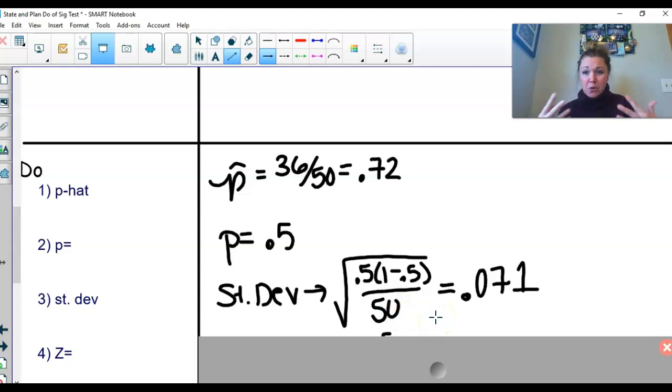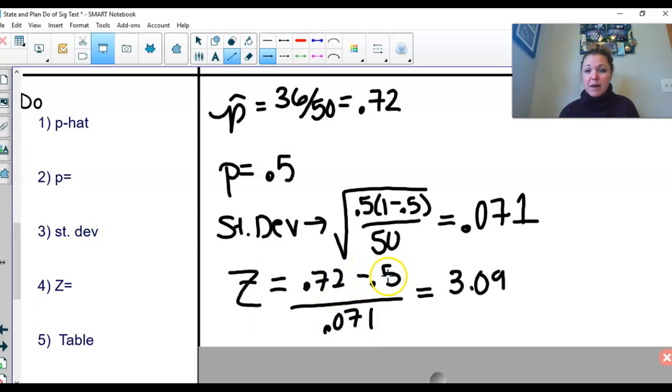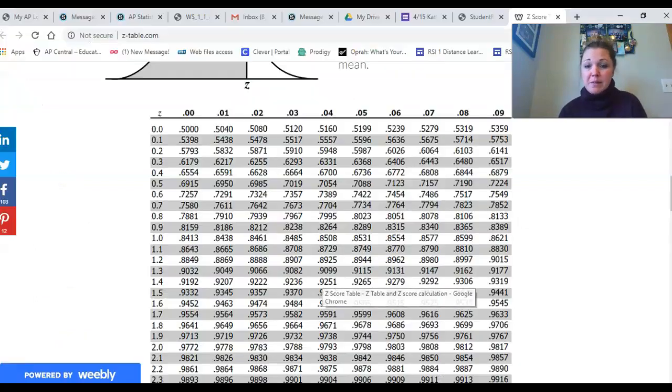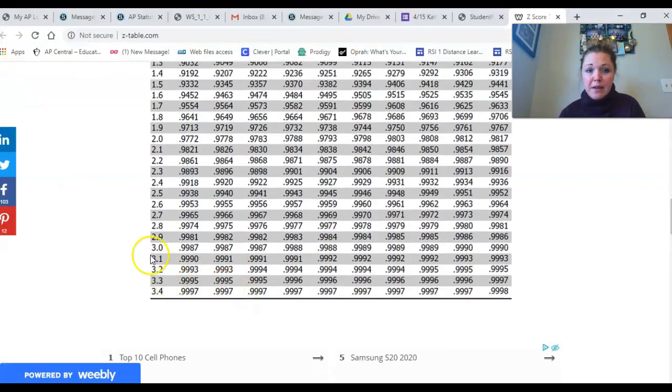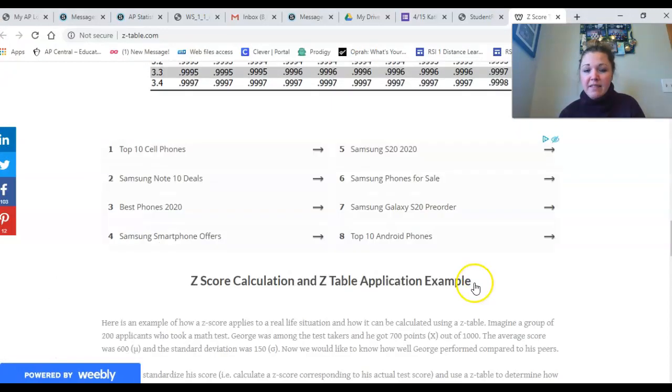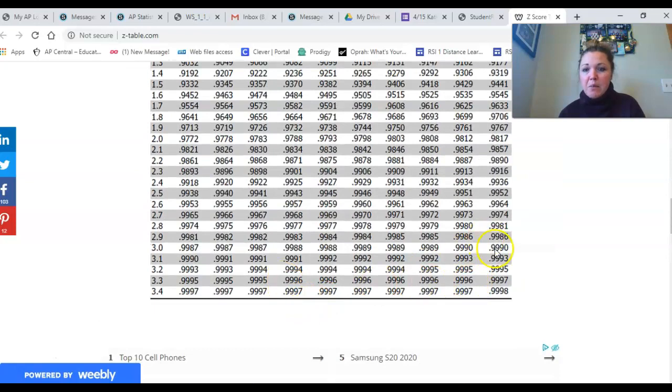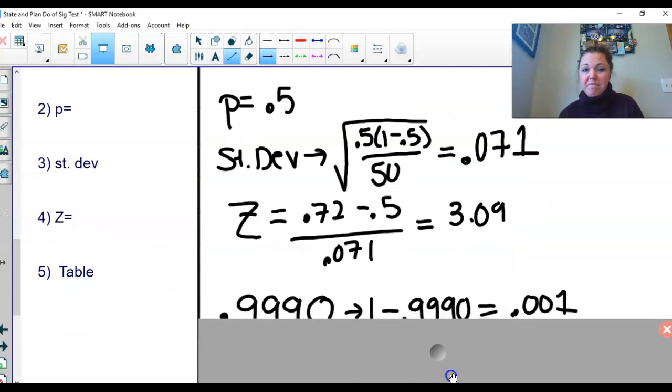All right, now we find our z score and we know that our z, we take step one minus step two divided by step three. 0.72 minus 0.5 divided by 0.071. Now I go to my table, 3.09. So to that z score, 3.09, 3.0, and then nine, right? Sorry, guys. Which is 0.999.